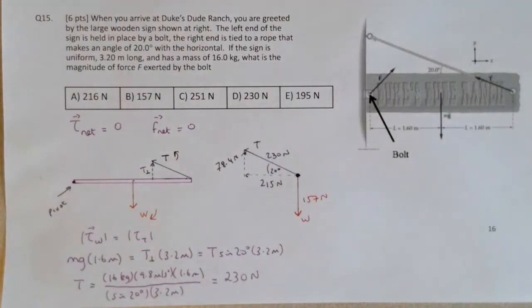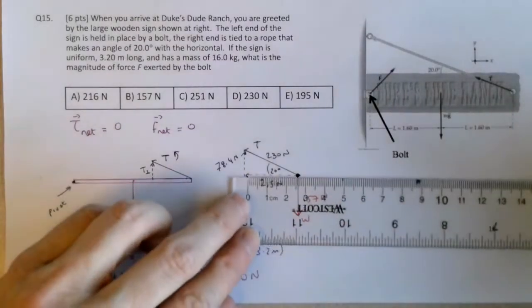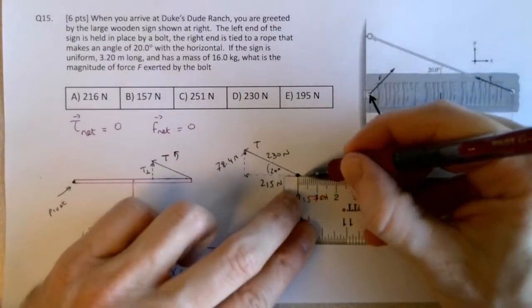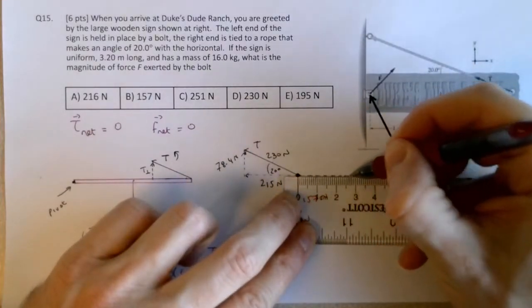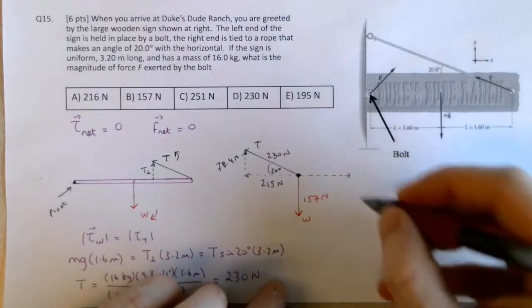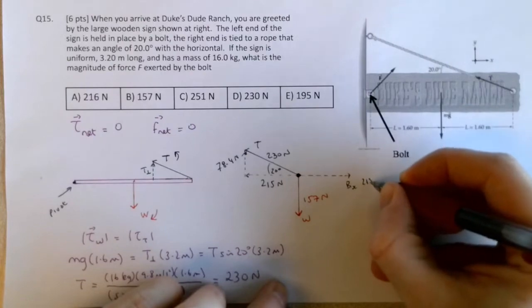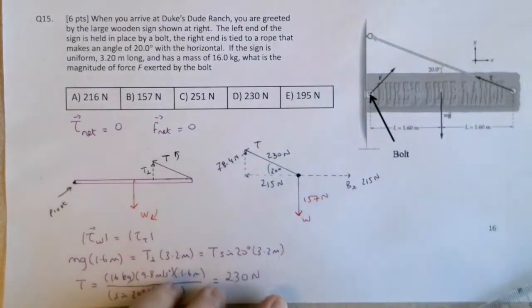So the bolt force has to balance these. Since the weight has no x-component, the size of the x-component of the bolt force has to be exactly equal to the x-component of the tension. So this is the bolt force x, and it has to be also 215 newtons to balance out the x-component of the tension force.